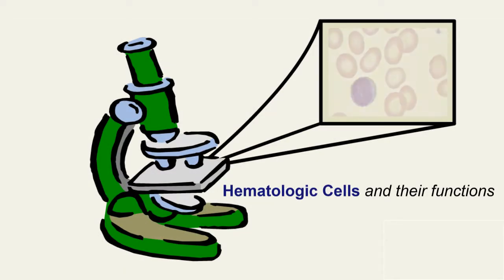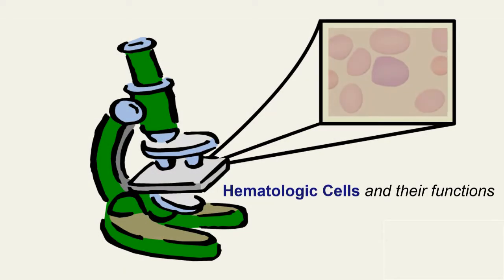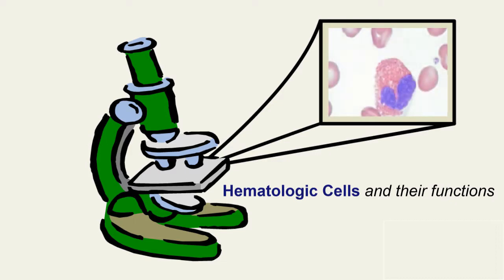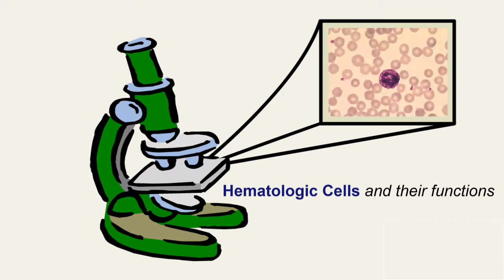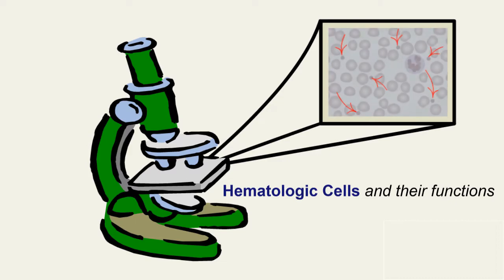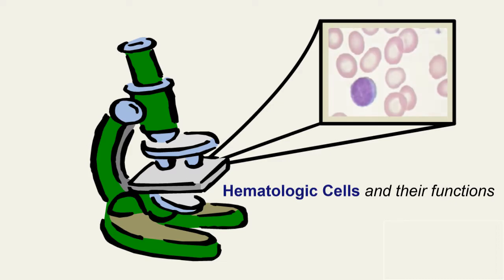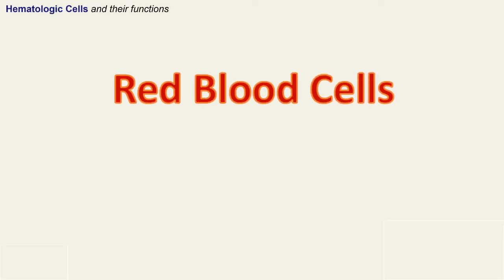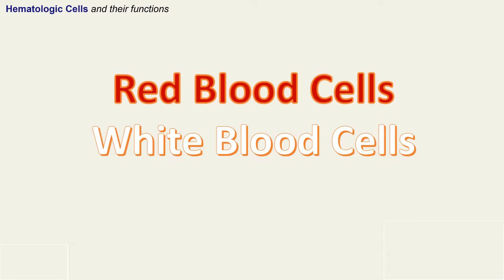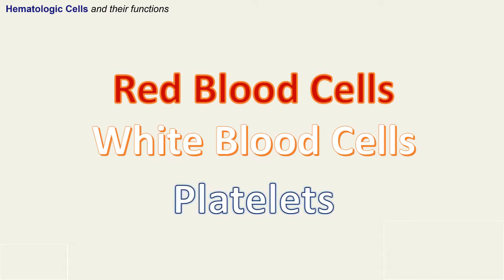Hematologic Cells and Their Functions. In this learning object, we will identify normal blood cells and their functions. This will include the identification of red blood cells, five types of white blood cells, and platelets.